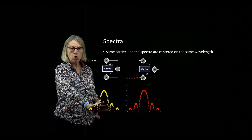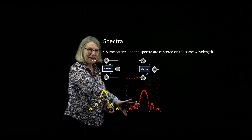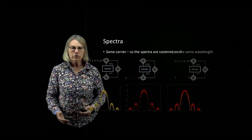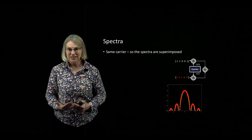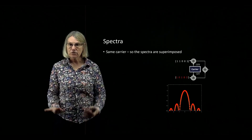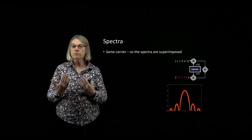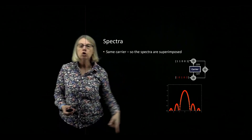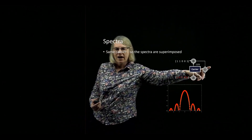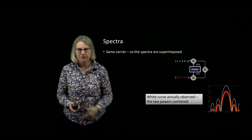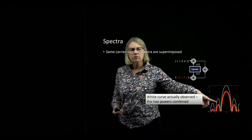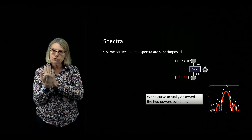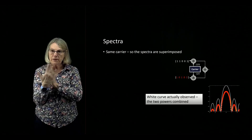If before I sent only yellow or only red, that would have this amount of information sent in this bandwidth. But now I'm sending both simultaneously, which means it's very spectrally efficient. Of course, the power spectral density at the output of this transmitter would be the sum — this white curve — which is the result of these two superimposed power spectral densities.